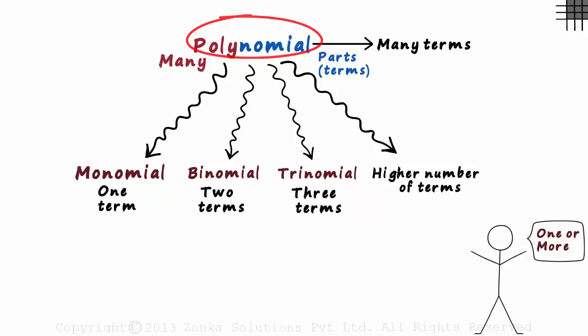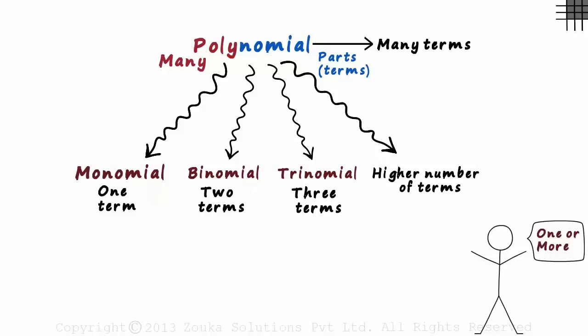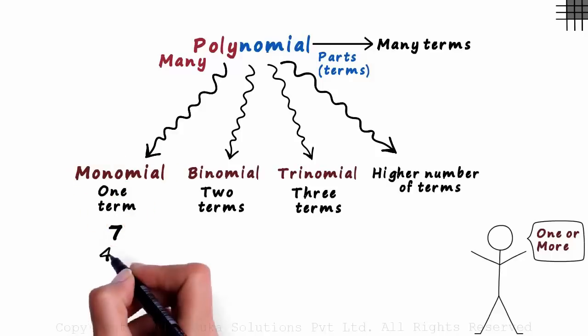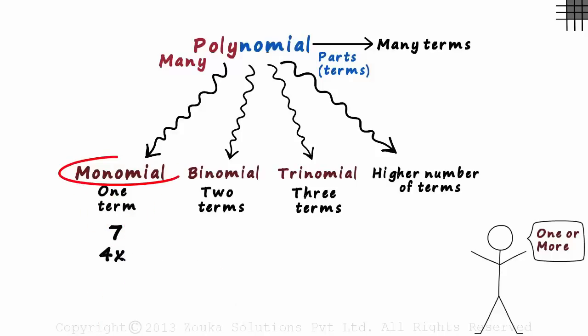Let's look at a few examples of each. The number seven is a monomial. It's just one term. Four x is also a monomial. It's just one term as four and x are multiplied. Even 3ab squared is a monomial. And yes, all these expressions are also polynomials.